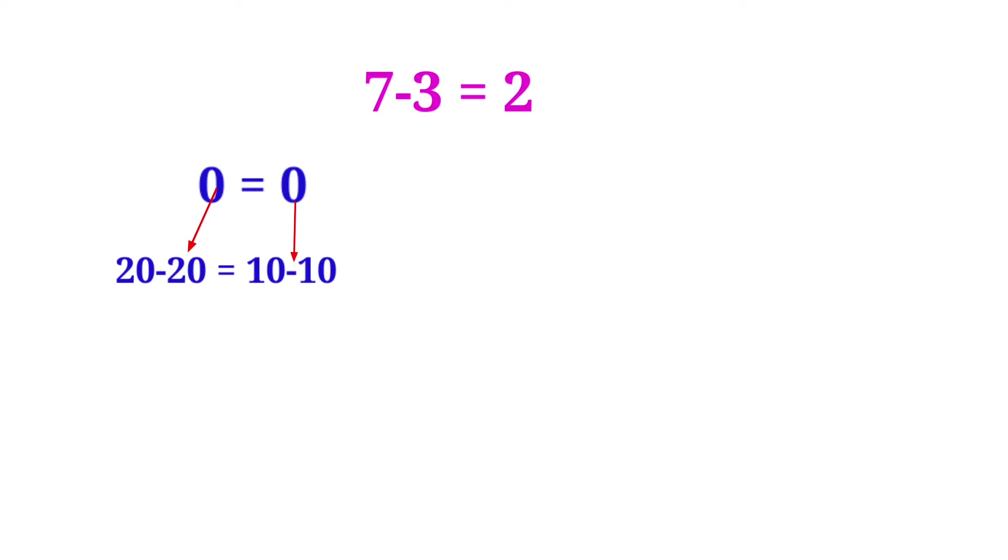Because 20-20 is equal to 0, and 10-10 is equal to 0, so 20-20 is equal to 10-10.